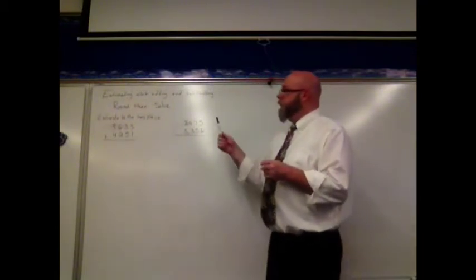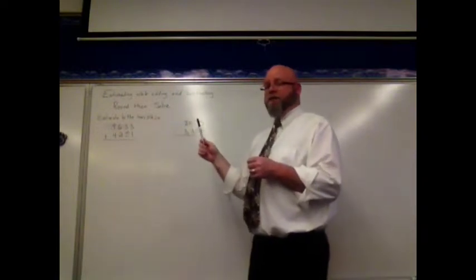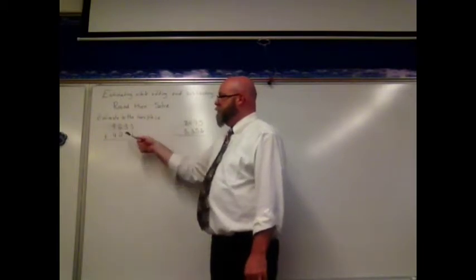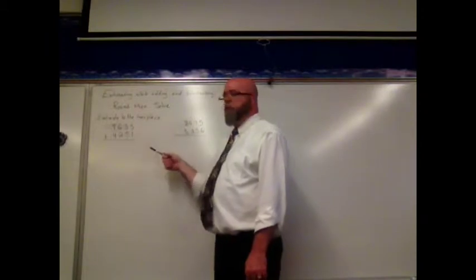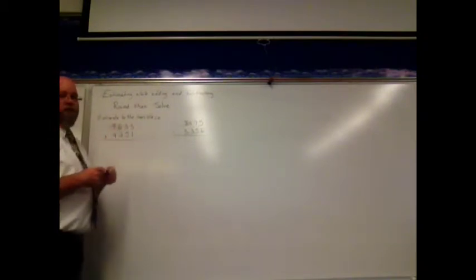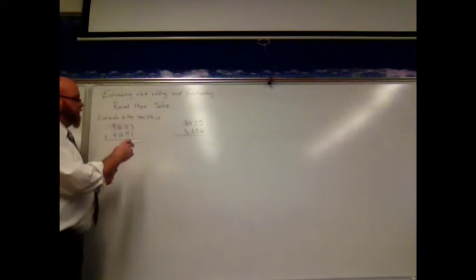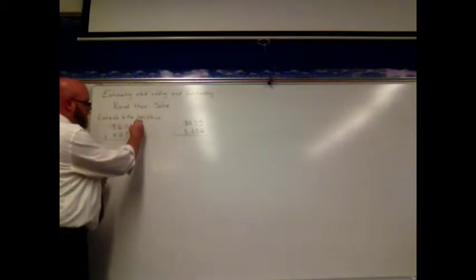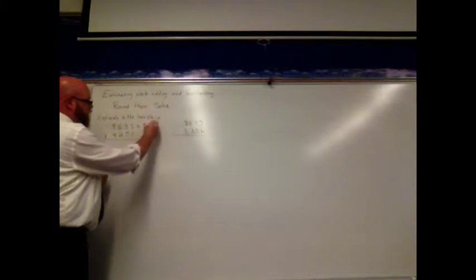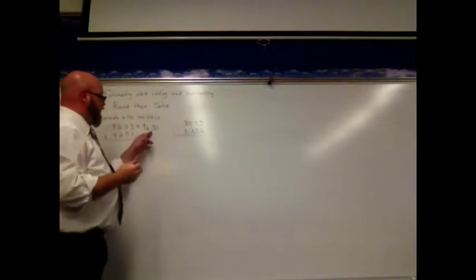Let's first look at rounding and estimating to the tens place. We want to add and subtract as we do this. We're going to estimate to the tens place: 9,633 plus 4,251. I need to think — rounding to the tens place, which is going to be closer? Is 9,633 closer to 9,630 or closer to 9,640? My rule for rounding is 5 to the sky, 4 and below let it go. So 9,633 is approximately 9,630 — I would round it to 30 in the tens place.